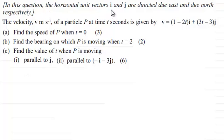So what we've got here is that in this question the horizontal unit vectors i and j are directed due east and due north respectively. And the velocity v meters per second of a particle p at time t seconds is given by the vector v equals 1 minus 2t in the i direction plus 3t minus 3 in the j direction.